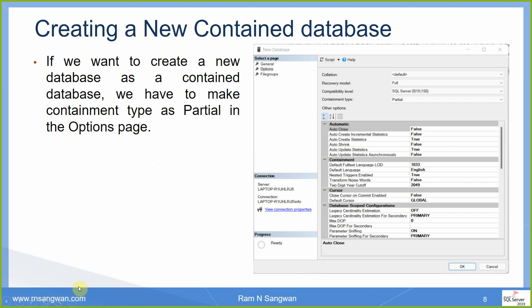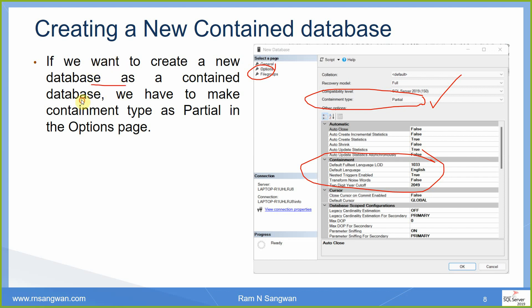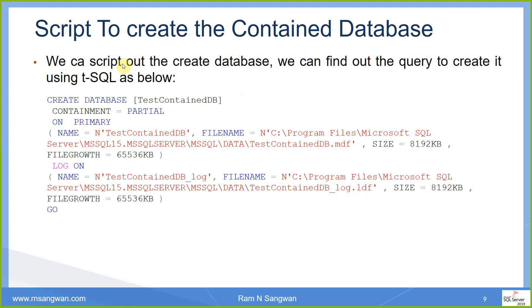When creating a new contained database, select the Create New Database option and go to the Options page. There you have the containment type — select Partial. Other extra settings can be specified within this block. In the create database script the syntax is: CREATE DATABASE [database_name] with CONTAINMENT = PARTIAL. The containment type is an optional parameter you specify when creating a contained database, followed by the rest of the details such as primary device and log file location.